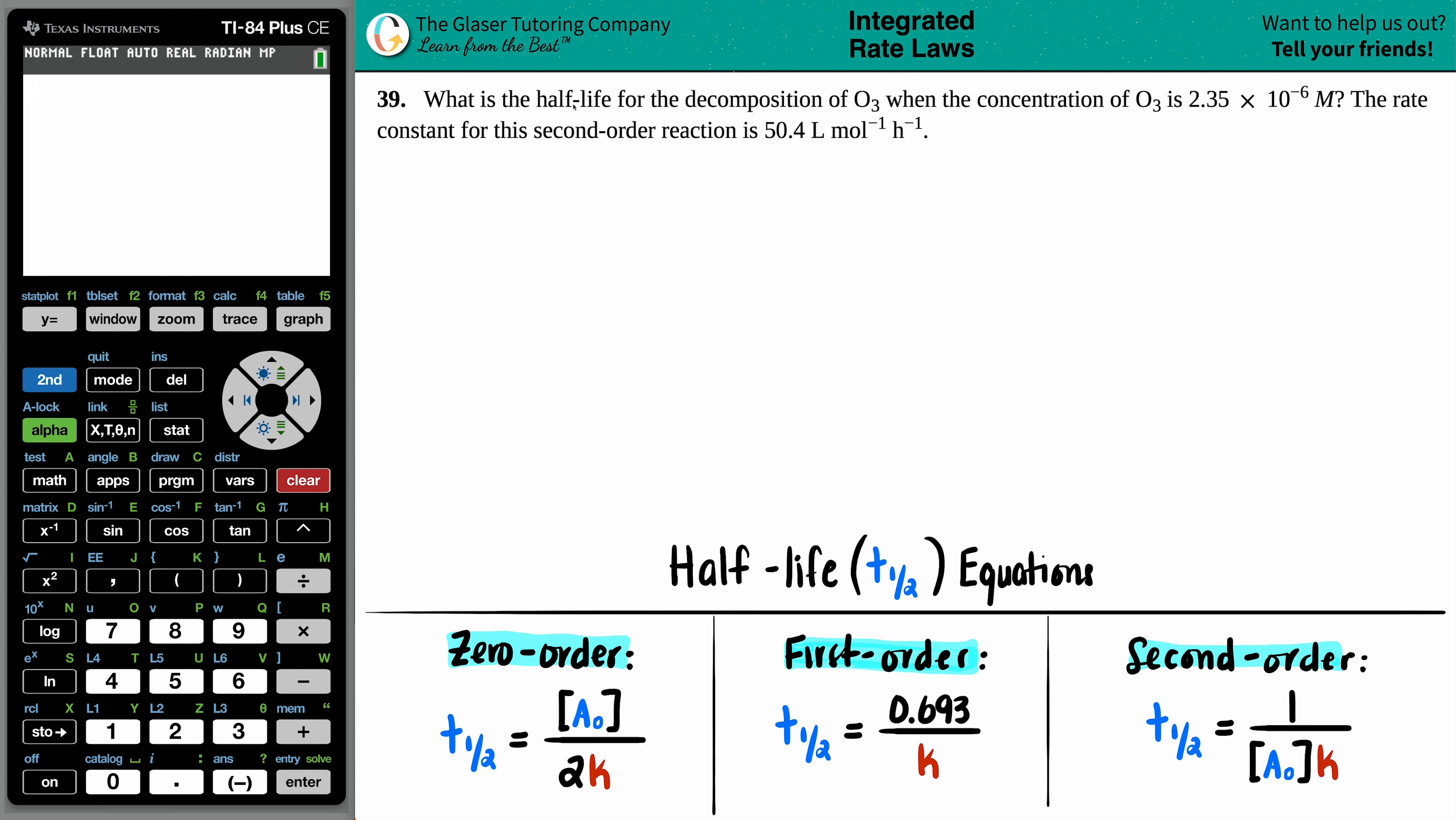Number 39. What is the half-life for the decomposition of O3 when the concentration of O3 is 2.35 times 10 to the negative 6 molarity? The rate constant for this second order reaction is 50.4 liters per mole per hour.